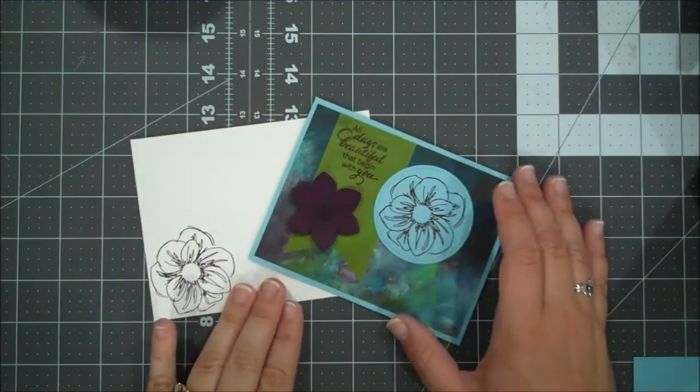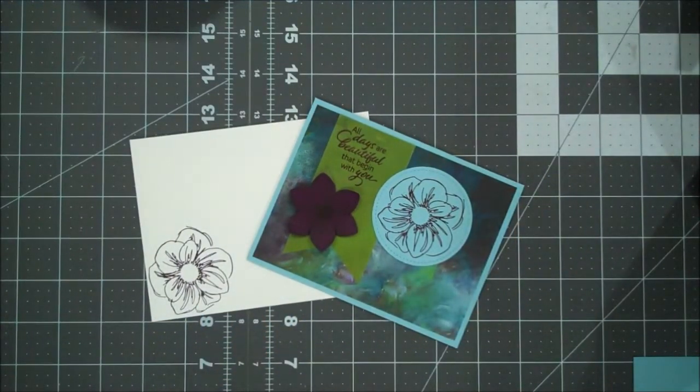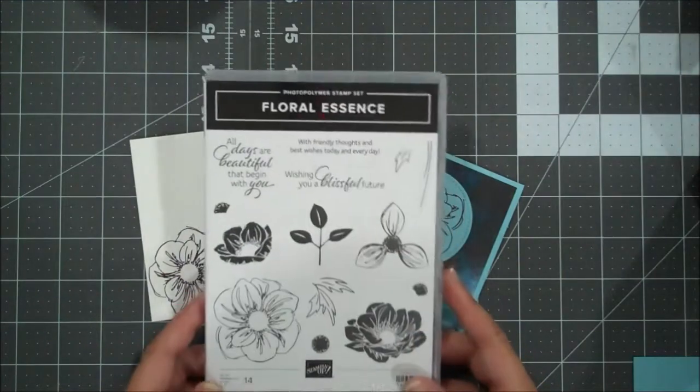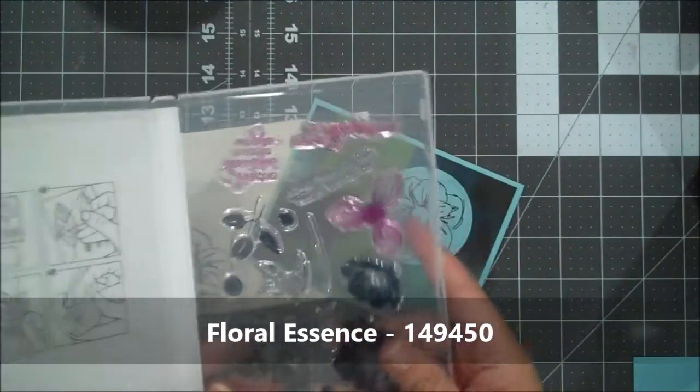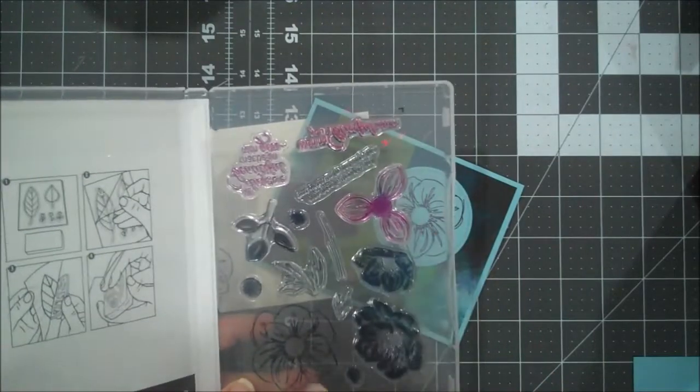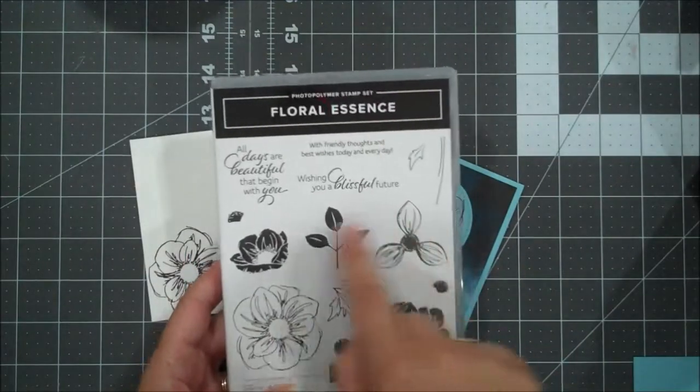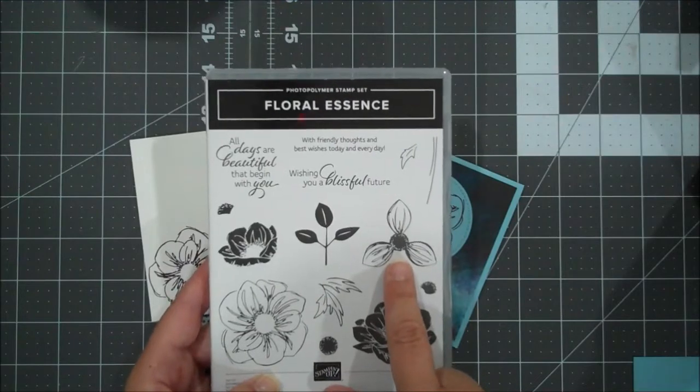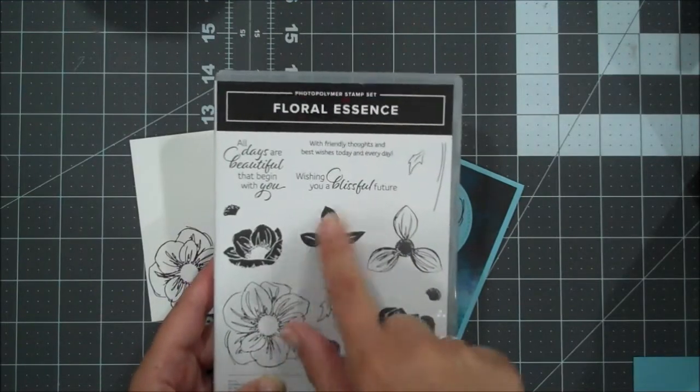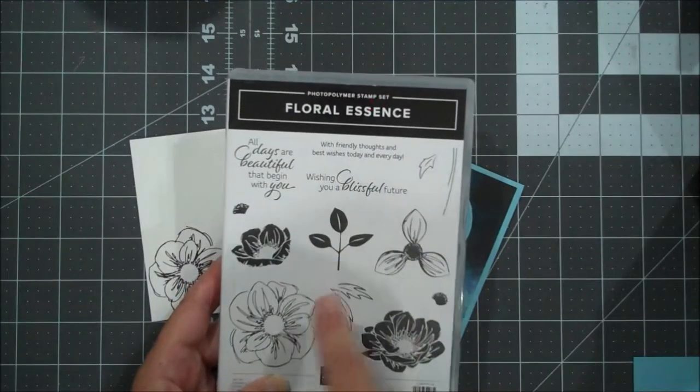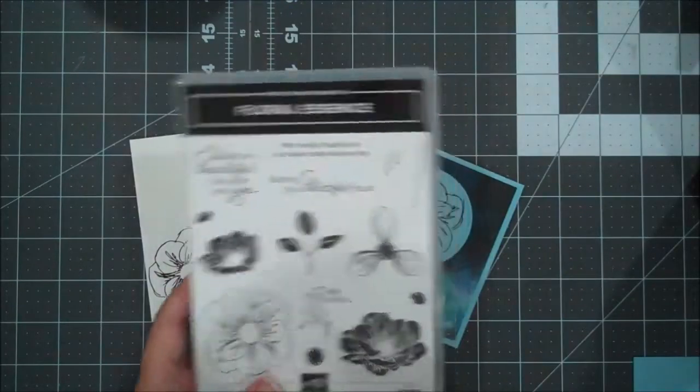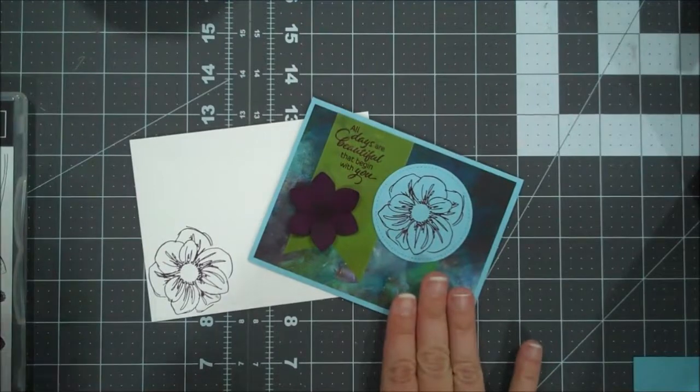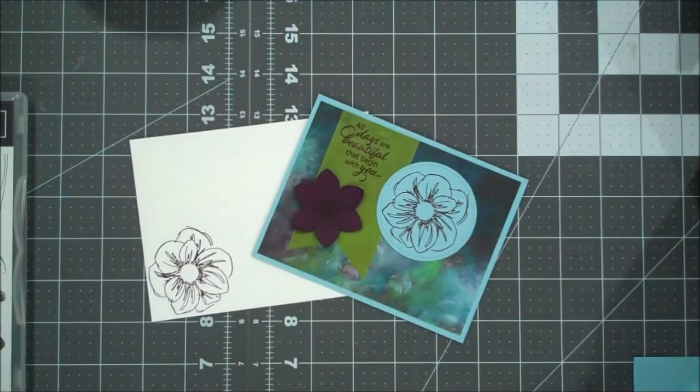This suite is called Perennial Essence and the stamp set that I'm using is called Floral Essence. It is a photopolymer set. You can see I've used it quite a bit already. It has some beautiful floral images in here. We have a new punch that coordinates with this flower and this leaf actually coordinates with our current leaf punch that we have in our catalog.